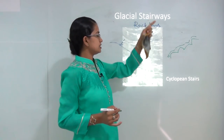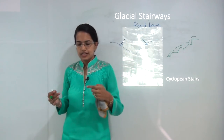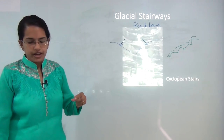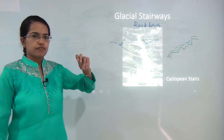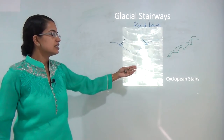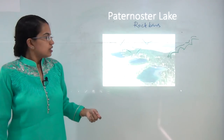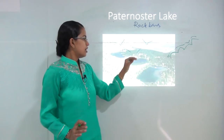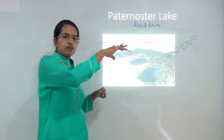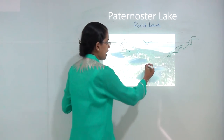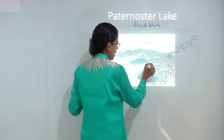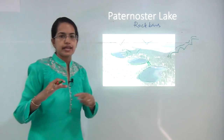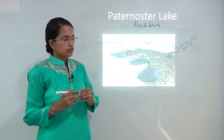Similar to glacial stairways, there is a type known as cyclopean stairways. Cyclopean stairways are a kind of longitudinal profile commonly seen in regions of hanging valleys — where there are numerous hanging valleys you will see cyclopean stairs. The next is Paternoster lakes, seen in regions where there is a kind of continuous lake formation — one lake, then a small pathway, then another lake and so on. A series of lakes is known as Paternoster lakes, commonly seen in northern Russia and Alaska.